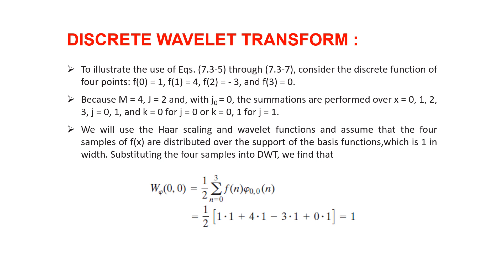Let us use an example of a discrete function with four points: f(0)=1, f(1)=4, f(2)=-3, and f(3)=0. We will use the Haar scaling and Wavelet function and assume that the four samples of f(x) are distributed over the support of the basis function which is 1 in width.